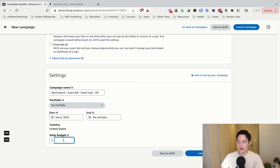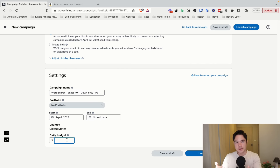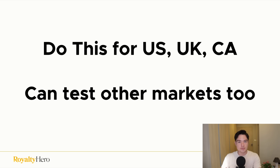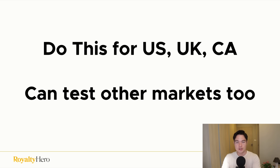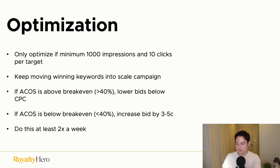Once finished, go back and do the same thing for the exact product scale campaign — just move your winning products over. That completes the walkthrough of all four campaign types. Start with the US market as it's the biggest, unless your book is in another language. Then test UK and Canada — those are the three biggest markets. You can test other markets as well.